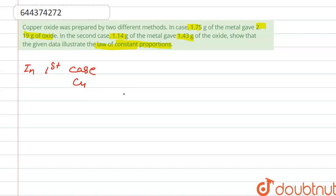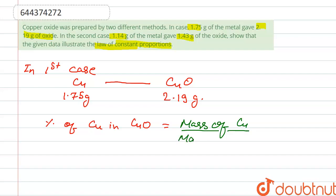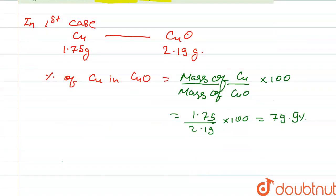In the first case, converting copper to copper oxide: the mass of copper is 1.75 grams and the mass of copper oxide is 2.19 grams. The percentage of copper (Cu) in copper oxide (CuO) is calculated as: mass of copper divided by mass of copper oxide, multiplied by 100. That gives us 1.75 divided by 2.19 into 100, which equals 79.9 percent.